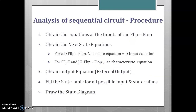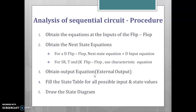Coming to the procedure for analysis of a sequential circuit: the first step involves obtaining the input equations of the flip-flop. Next, we determine the next state equation. For a D flip-flop, the next state equation is the same as the flip-flop input equation. For other flip-flops such as SR, T, and JK, we use the characteristic equation to determine the next state equation. Then, determine the output equation from the circuit diagram, fill the state table for all possible combinations of input and present state values, and finally draw the state diagram.